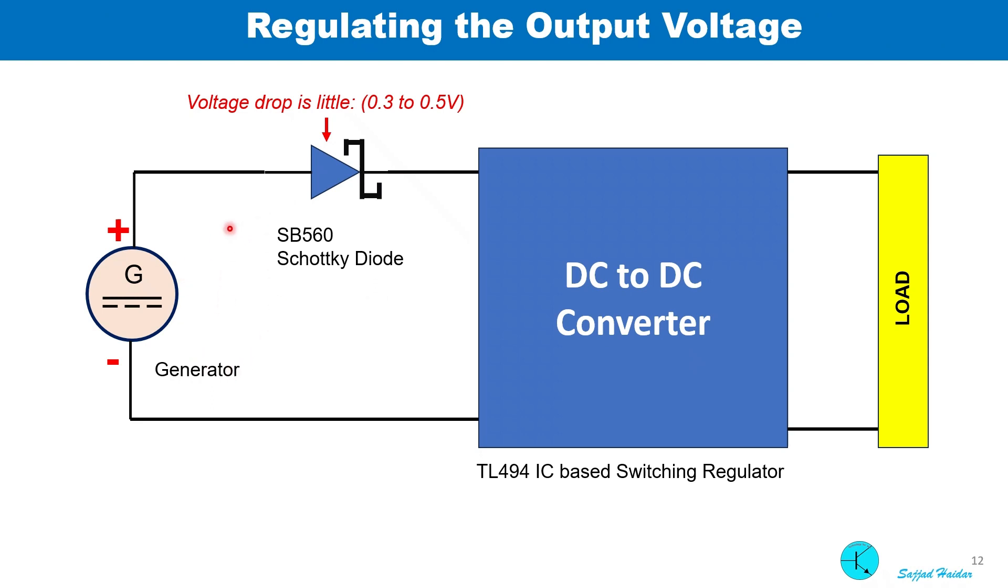As the generator output voltage depends on the rotational speed, the output will always fluctuate as our hand rotation will not be uniform. We need a voltage regulator at the output of the generator to get a stable output. In most applications, usually a switching regulator is used because of its higher efficiency compared to the linear regulators.